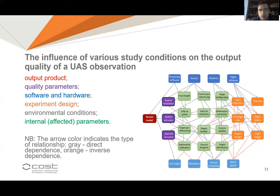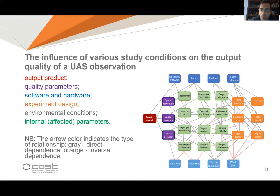The paper contains a number of considerations about the complexity of the problem in UAS survey applications. This graph, made by Maria Polinova, is extremely nice in identifying all the relationships that exist among the different elements we should take into consideration when using UAS for any kind of application or survey. This is one reason why we need guidelines and clear indication when we perform our surveys.